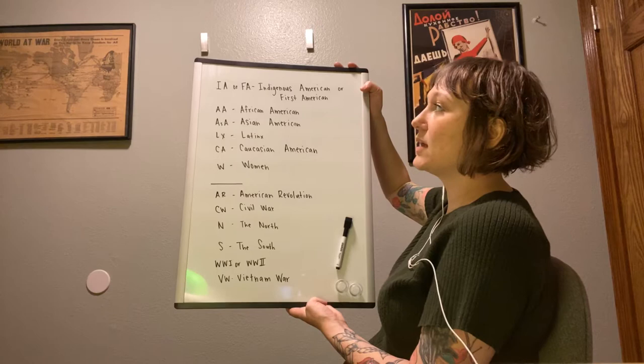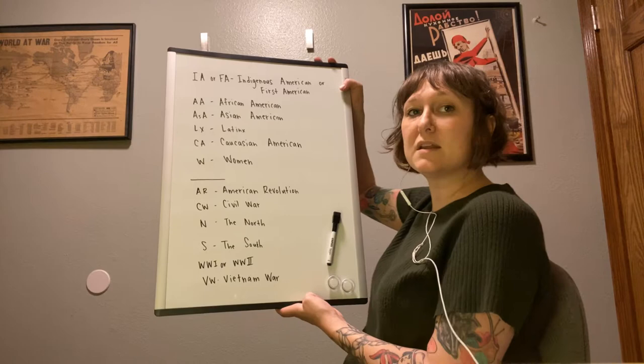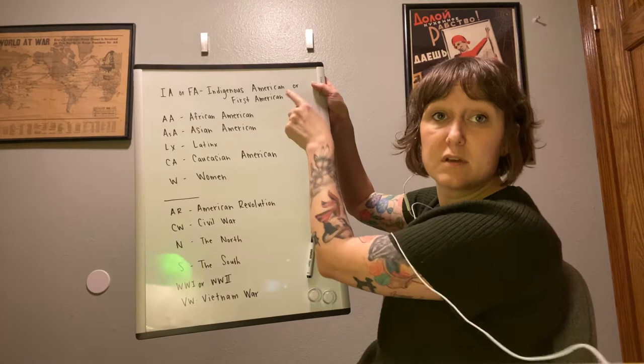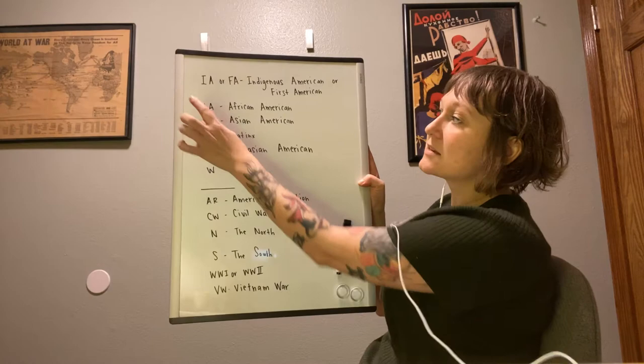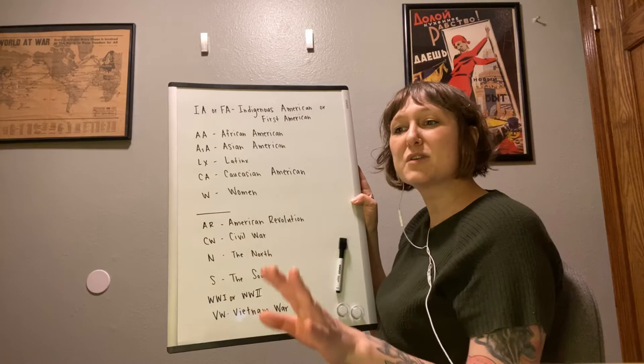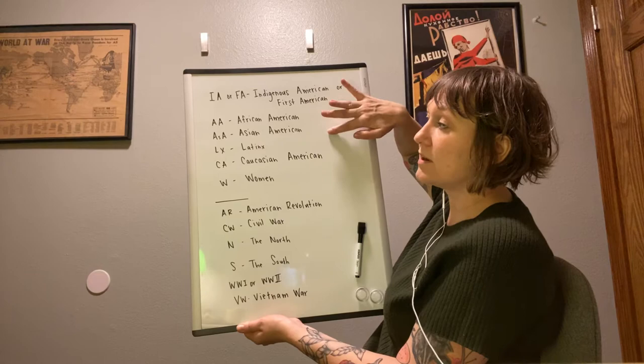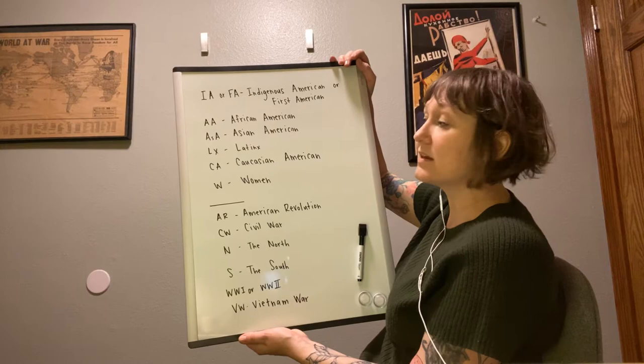I use IA or FA for Indigenous American or First American — that's a big one we'll use. I don't use the term Native American. American Indian is all right for some communities, but for all intents and purposes of this class I'm going to use one or the other: Indigenous American or First American. AA is another one — for African American whenever we get to that. Asian American, I do a little 'sA' so it helps me distinguish. Latinx is LX. Caucasian American is CA.